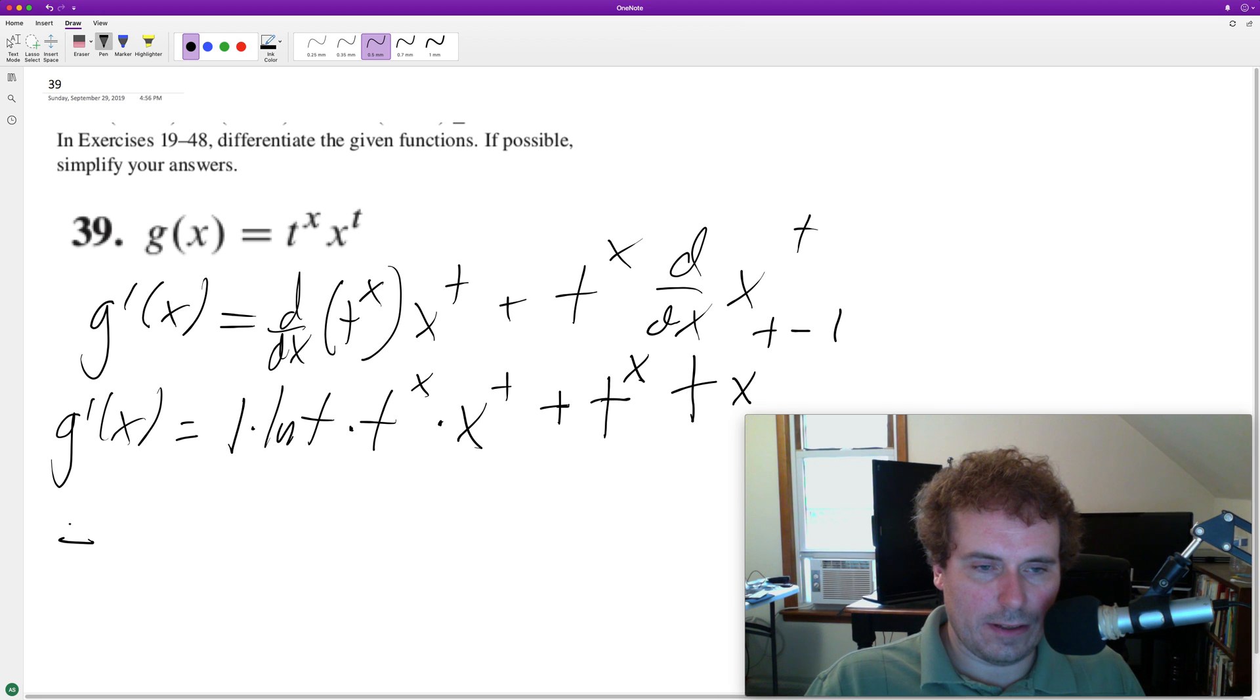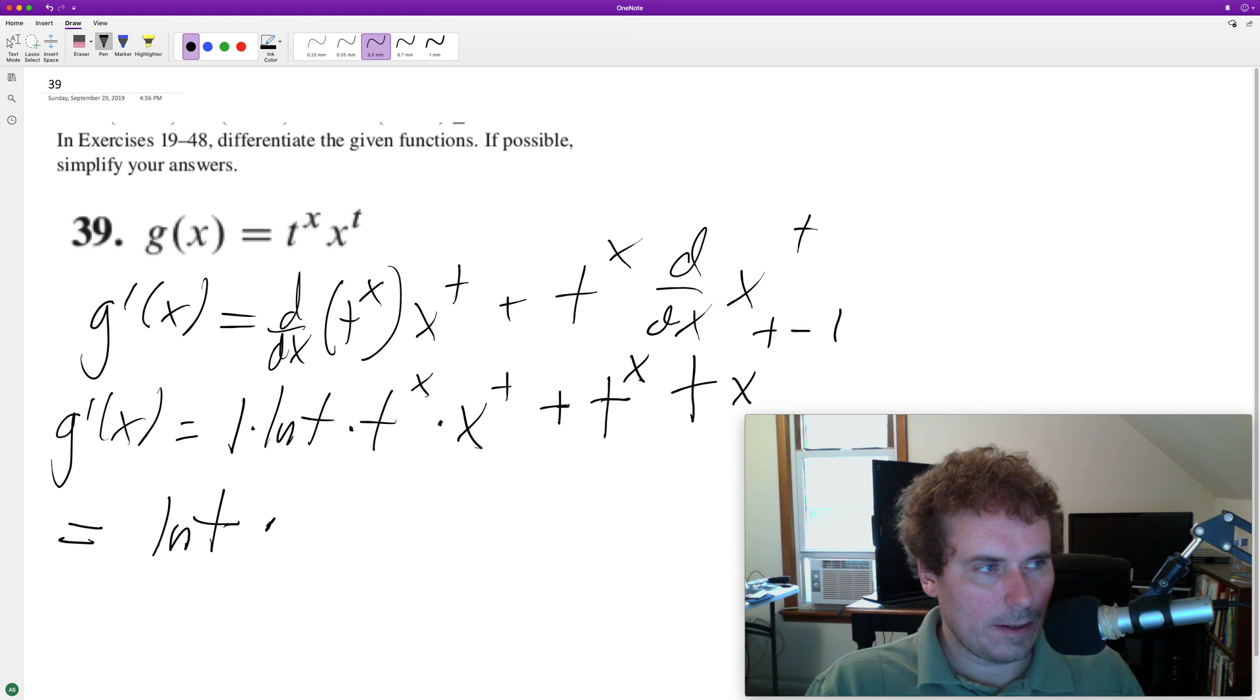So over here on the left, we get natural log of t, t raised to the x, x raised to the t. That's already simplified as is, plus